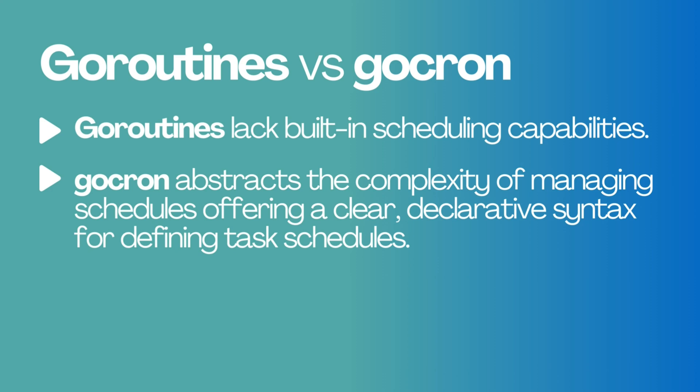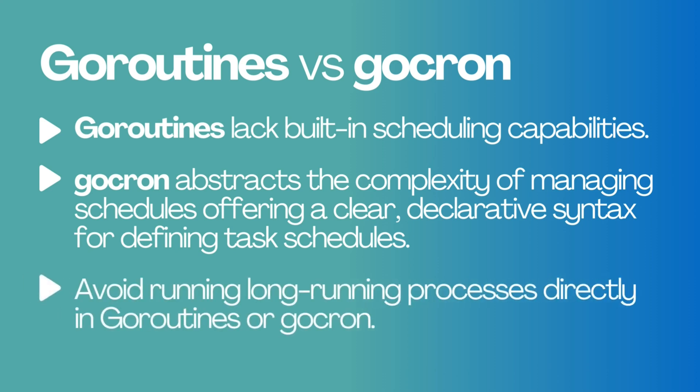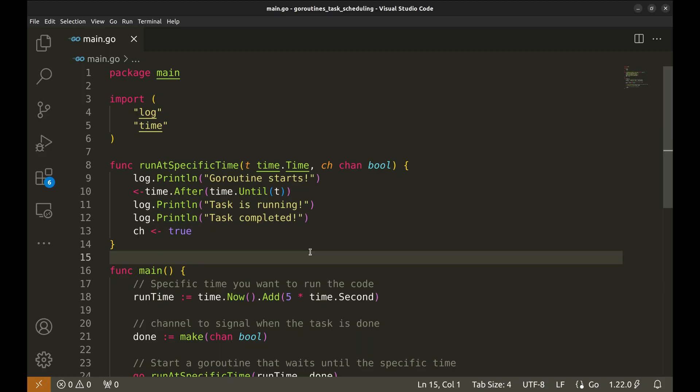This becomes especially important in distributed systems where tasks need to be managed across multiple instances without risking conflicts or missed executions. Ideally, you would not want to run long-running processes in a goroutine or GoCron in a distributed environment. It is always advisable to add the job to a queue and let the workers take care of it in the background. We will cover this later in this episode.